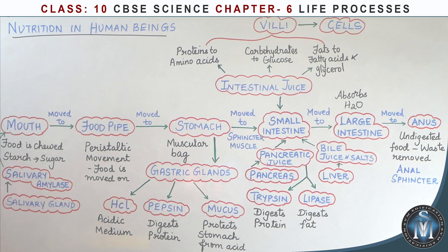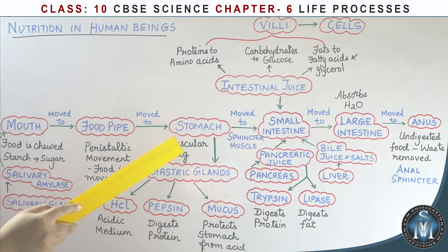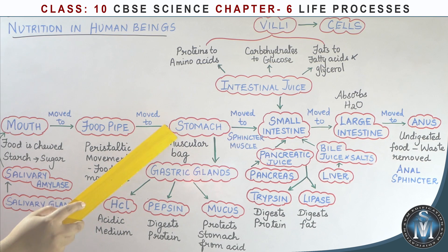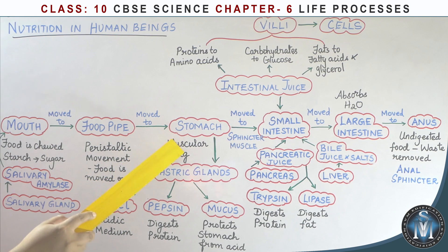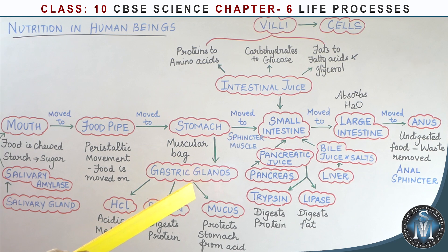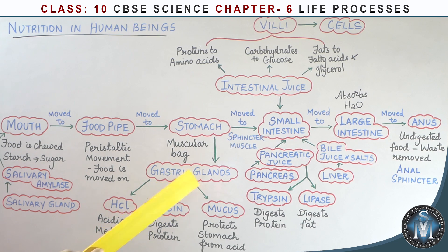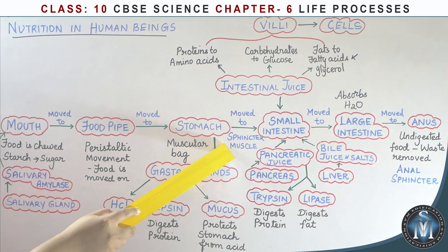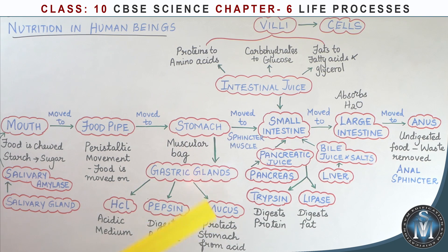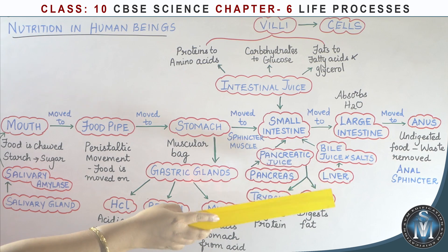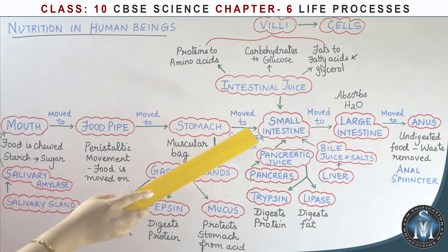The mucus protects the lining of our stomach from the acid. Without it, the acid would affect the lining and cause ulcers. After the stomach, the food moves to the small intestine, which is a very thin pipe where the main digestion and absorption of nutrients occurs.